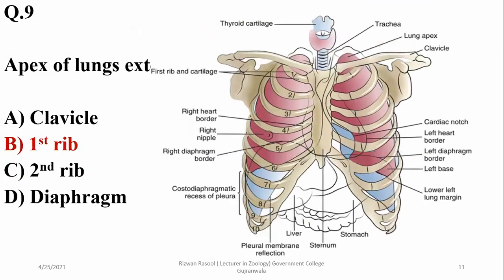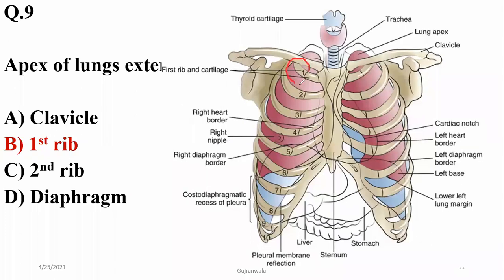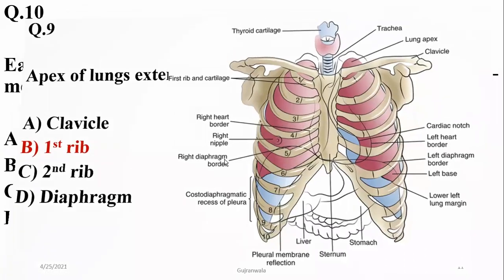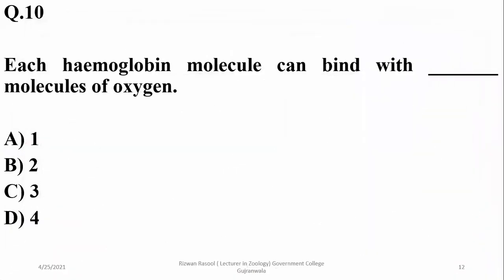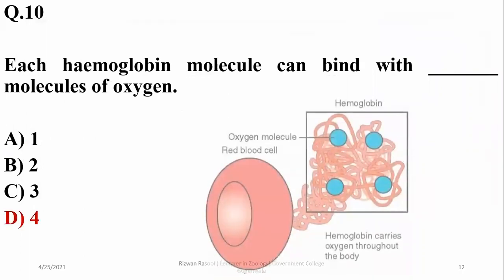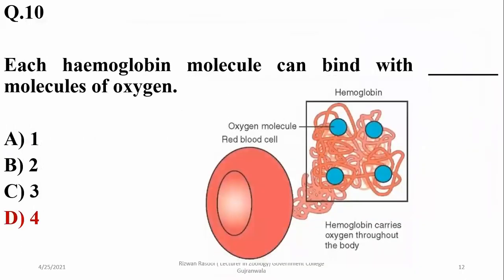Question nine: the apex of the lungs extends above the first rib, as seen in the diagram — the lungs stand higher than the first pair of ribs, so beta is correct. Question ten: each hemoglobin molecule can bind with four molecules of oxygen because there are four heme groups, and each heme group can carry one oxygen molecule.